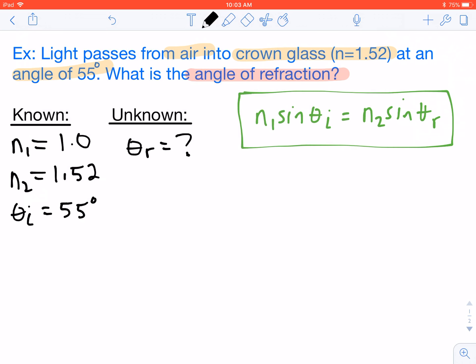So first off, n1 is 1.0. Sine of theta i, which is 55 degrees, that's going to equal n2, which is 1.52, times sine of theta r.